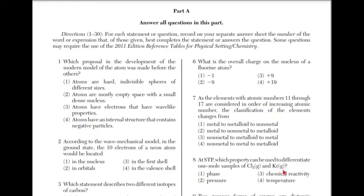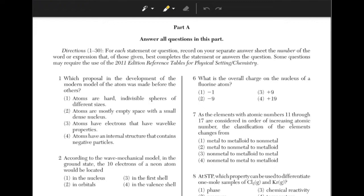Then J.J. Thomson proposed the Plum Pudding Model, that there was a positive sphere surrounded by negative particles. Ernest Rutherford performed the gold foil experiment, where he deduced that the atom was mostly made of space but had a dense nucleus. Bohr hypothesized that the electrons revolved around the nucleus, like planets revolved around the Sun.